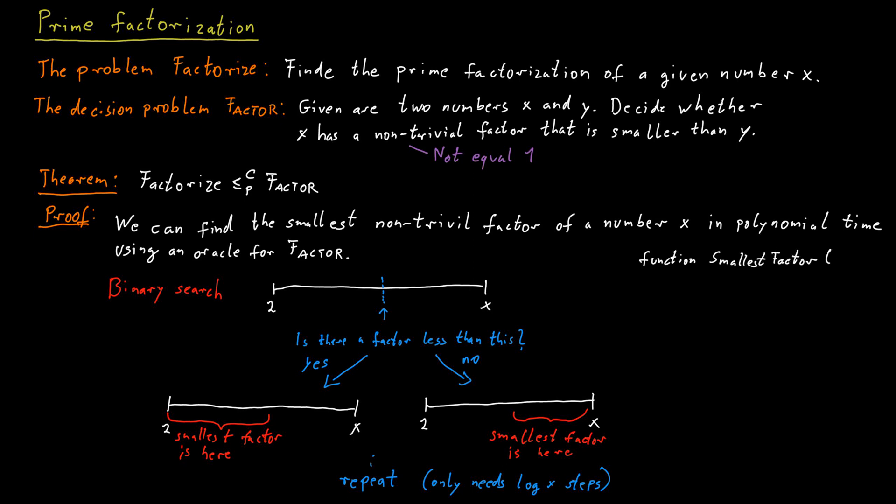We start with the interval from 2 to x. And then as long as the interval contains more than one element, we look at the middle of that interval. And we are asking whether there's a factor of x that is smaller than this middle point of the interval. And if yes, then we adjust the right hand side of the interval to make it smaller and set it equal to the middle.